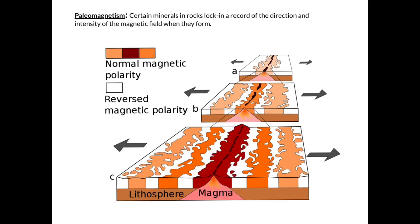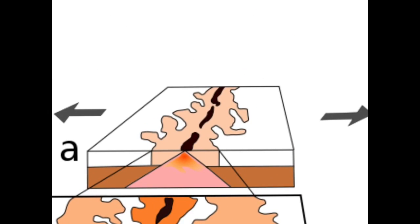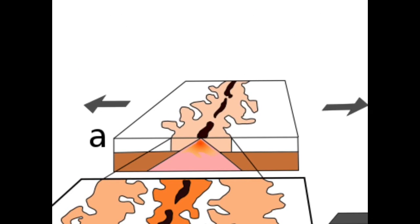So looking at this figure here, this will be our first period of time. We have this magma rising up to the surface. We're going to say that our magnetic north is positive currently, so we're getting positive values. Magnetic north is the same as true north, sort of like the conditions we have today. So we'll get positive values on each side of this mid-ocean ridge here.